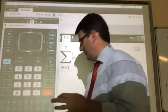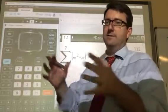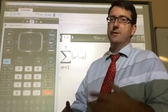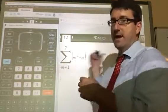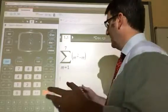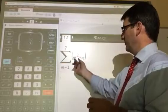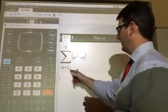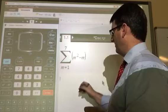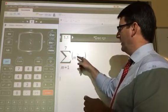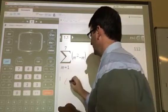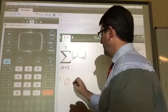All right, let me just briefly talk about what this means so that you have some idea of whether or not this answer is anywhere in the right ballpark. What this is saying is that we want the first seven terms of this sequence. So if we plugged in 1 for m, 1 squared is 1 minus 1 is 0. So the first term is 0.